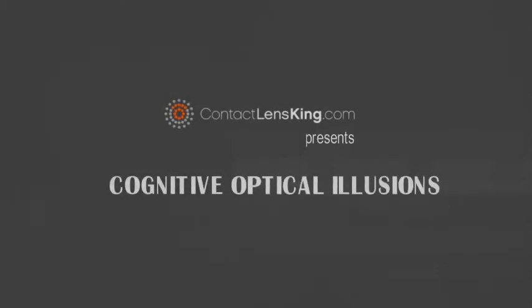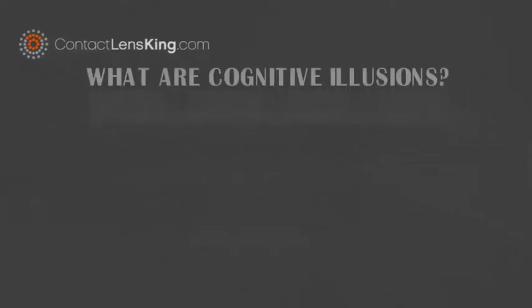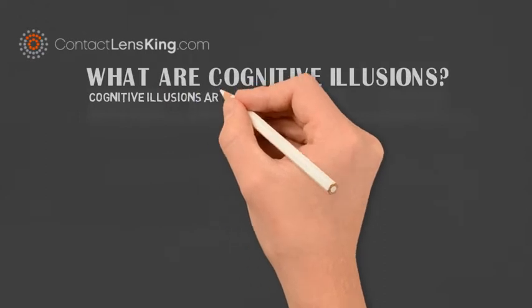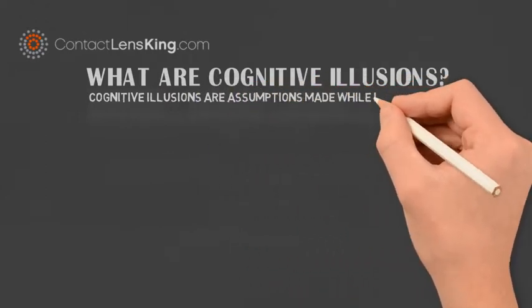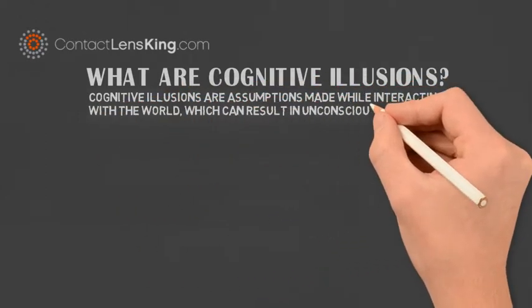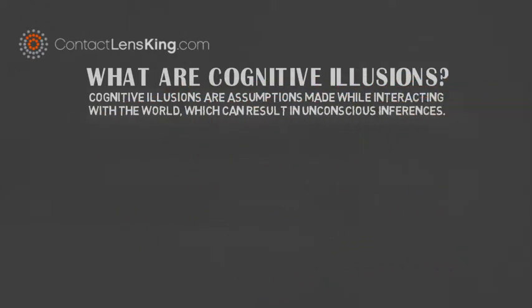Cognitive optical illusions. What are cognitive illusions? Cognitive illusions are assumptions made while interacting with the world, which can result in unconscious inferences.